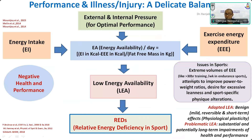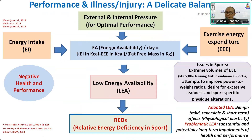If sufficient energy is not available, it will lead to low energy availability. This is more common in sports because sports are associated with an extreme volume of exercise energy expenditure. In some sports like endurance sports, more than 30 hours of training per week may happen, or there is an attempt to improve the power-to-weight ratio, a desire for excessive leanness, or sports-specific physical requirements — for example, for a dancer or a gymnast. Because of this low energy availability, it may lead to adaptive LEA — meaning physiology is able to counter it through compensatory mechanisms, which is basically physiological plasticity.